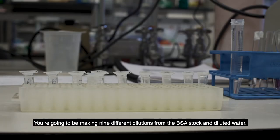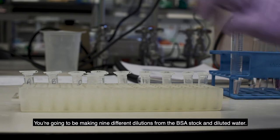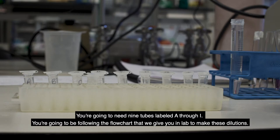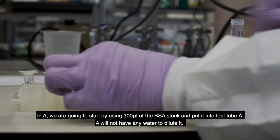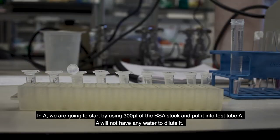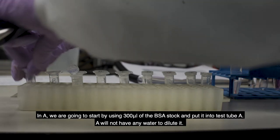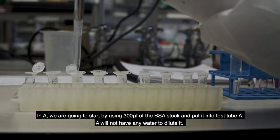You're going to be making nine different dilutions from the BSA stock and then diluted water. So you're going to need nine tubes labeled A through I, and then you're going to be following the flow chart that we give you in lab to make these dilutions. But for demonstration purposes, I'm just going to go through how to make the first three. So in A, we're going to start with using 300 microliters of the BSA stock, and then we're going to put that into A, and A won't have any water to dilute in.